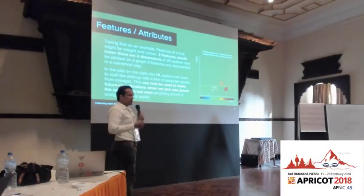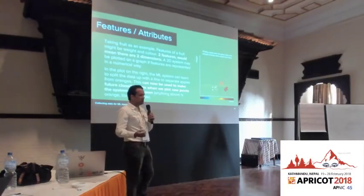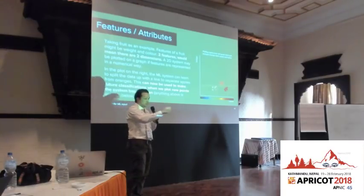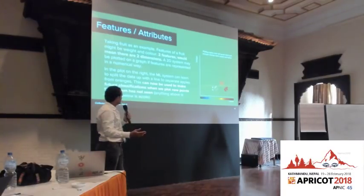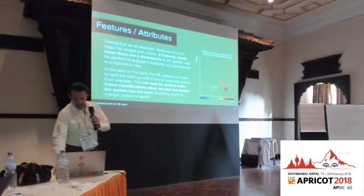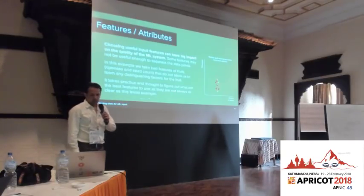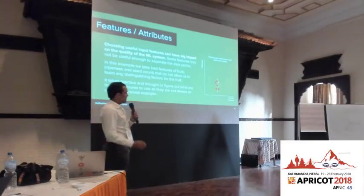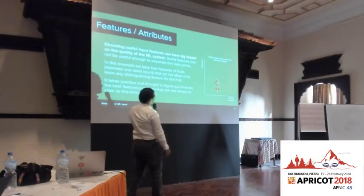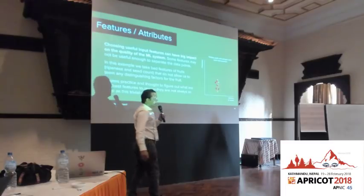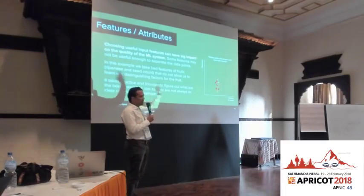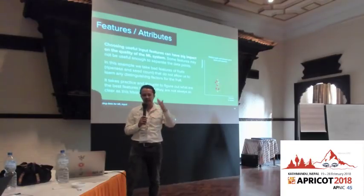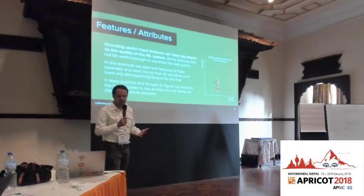You can treat this as a very simple naive machine learning system if you could make a program to calculate the equation of that line automatically. For an unseen example, if it lies above the line it's an orange; if below, it's an apple. However, if you choose bad features — like ripeness and number of seeds — you may get a scatter plot that's very hard to divide up, making future predictions unreliable. In the real world, it's not as clear-cut as apples and oranges.